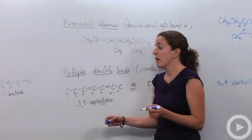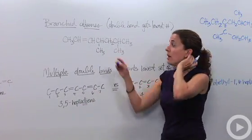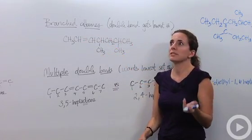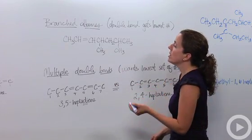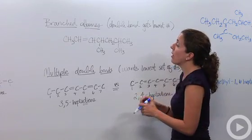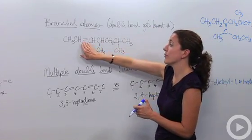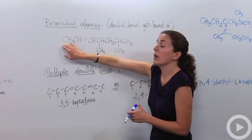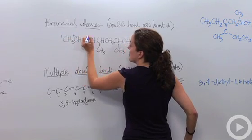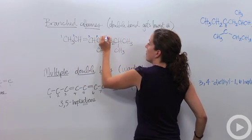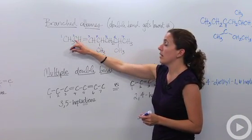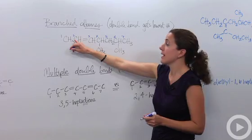When we get branched alkenes, like the pentene we looked at, there are branches coming off. We have our parent chain and some substituent groups. Just like when we name alkanes, we number our carbons so the double bond gets the lowest number. The double bond is on the left side, so we number carbons from left to right: one, two, three, four, five, six, seven. Our double bond is between the second and third carbon.